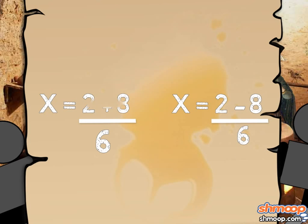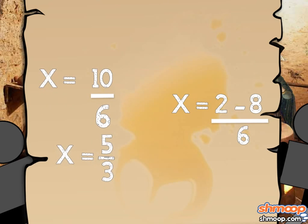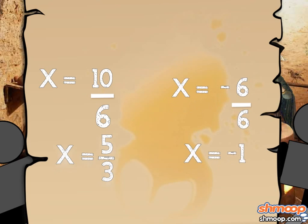2 plus 8 equals 10, so x equals 10 over 6, which reduces to 5 over 3. As for the other one, 2 minus 8 equals negative 6. Negative 6 over 6 reduces to negative 1, and x equals negative 1.